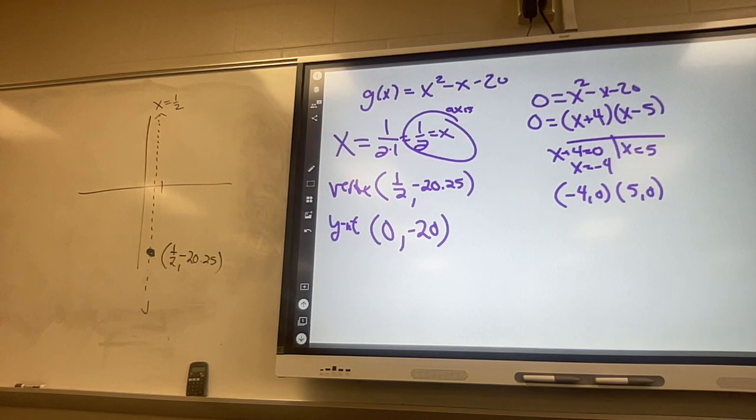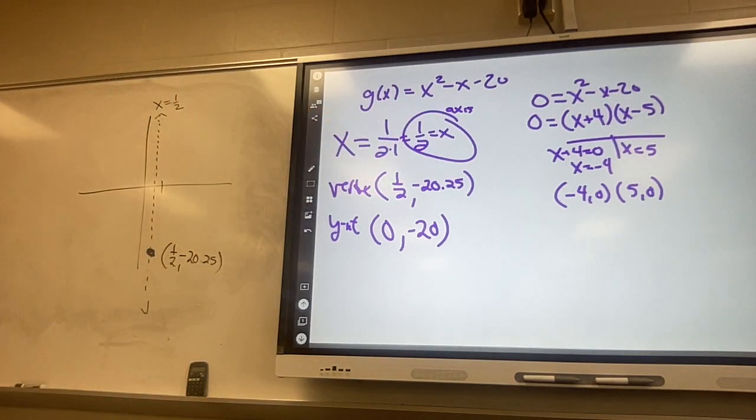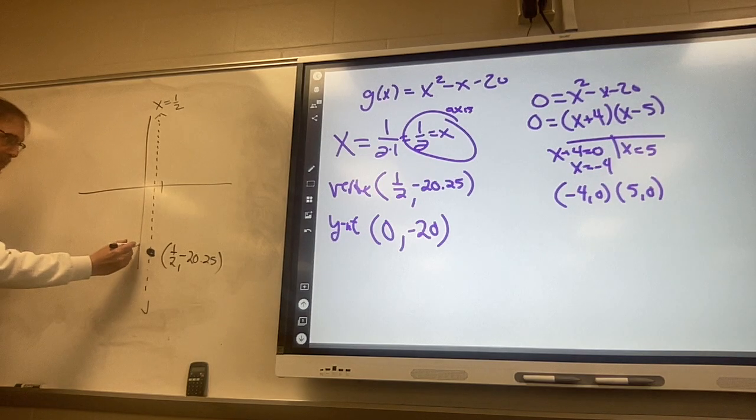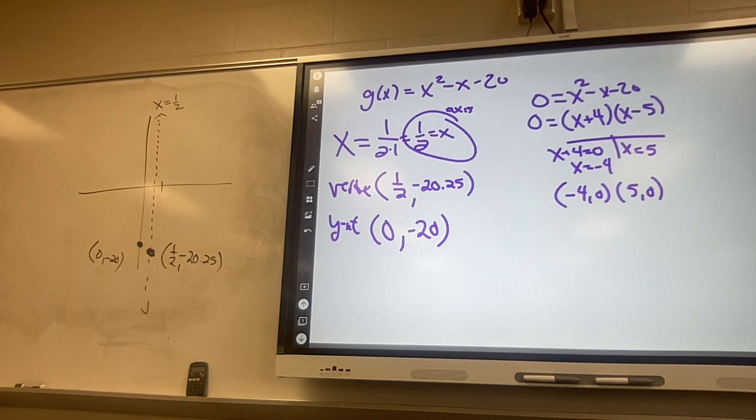You can just do an approximate and put a dot right here and you can write 1 half comma negative 20.25. You do not need to make that accurate and count down 20, etc. Was it the x part? x equals negative b, so it was negative negative 1. The y-intercept is zero comma negative 20, so that should just be a little bit more. It is on the y line. Go out of the way and write zero comma negative 20.